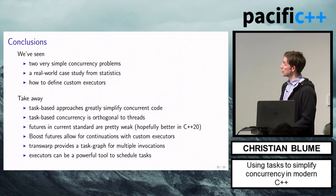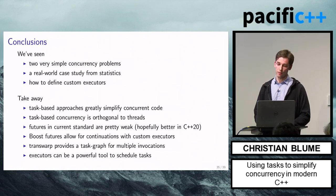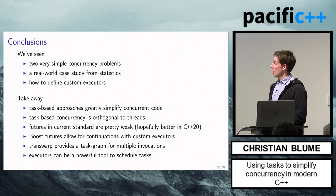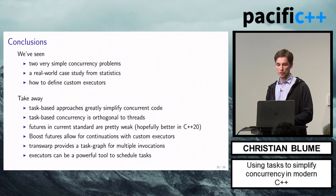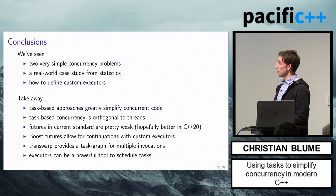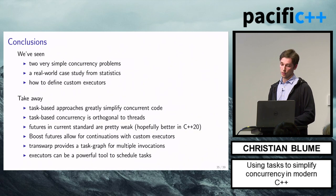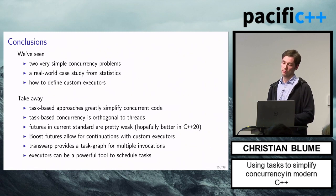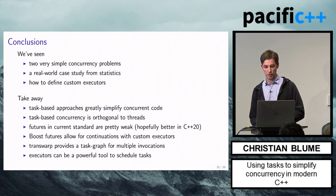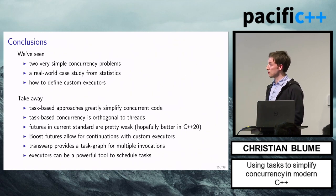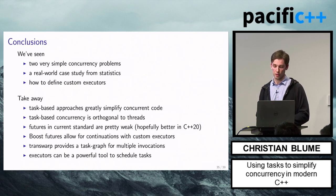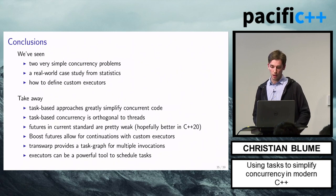Coming to conclusions: we've seen two simple concurrency problems, a real-world case study from statistics, and how to define custom executors. The takeaway is that task-based approaches greatly simplify concurrent code — and maybe soon with coroutines even more so. Task-based concurrency is orthogonal to threads. Unfortunately the futures of the current standard are pretty weak but will hopefully be better soon — they're not very useful for real-world applications due to lack of continuations and executors. Boost fortunately has that built in. Transwarp provides a task graph for multiple invocations, and executors can be a powerful tool to schedule tasks on user-defined threads. Thank you.